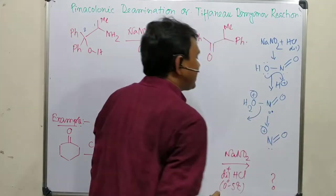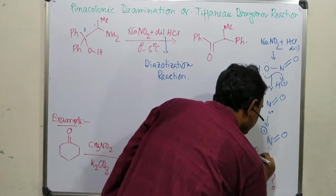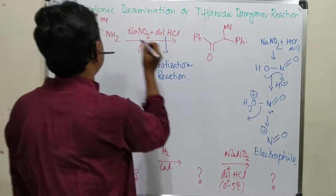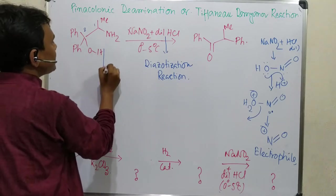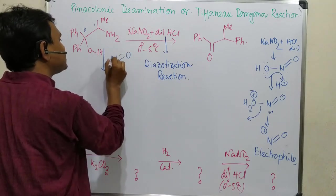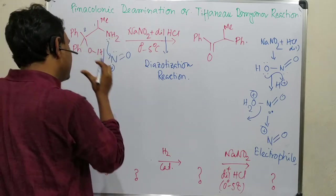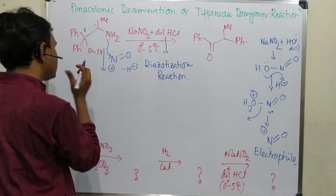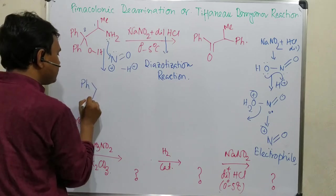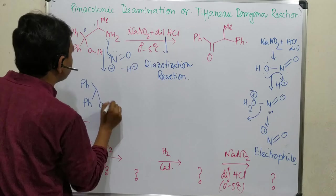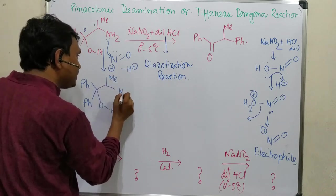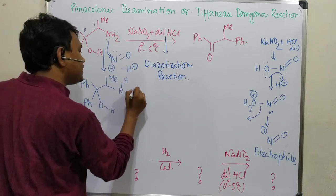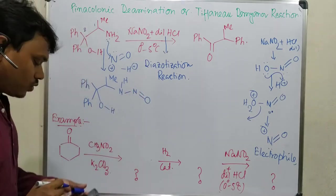NO₂⁺ is N≡O with a lone pair — it is the electrophile. The nucleophile is the amine. So the lone pair of the amine attacks NO₂⁺. After that, the charge neutralizes and one proton is eliminated (−H⁺), making it neutral. The product shows Ph, OH, methyl, and an N—H group along with the nitroso (N=O) moiety — this is the N-nitroso derivative.